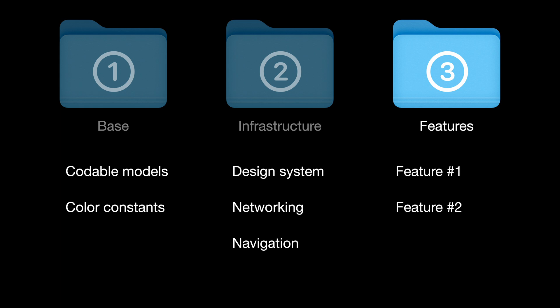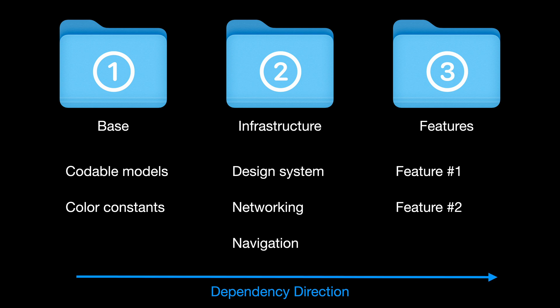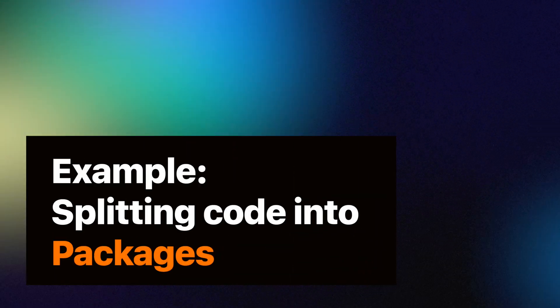It's important to know that these package levels determine which packages can depend on which ones. Base packages cannot depend on packages from infrastructure or features. Infrastructure packages can depend on base ones but not on features. We also need to avoid circular dependencies between packages. I will split into SPM packages the movie app in a similar way to the app from my day job. This separation might not be needed for such a small app, but I do it for illustration purposes.